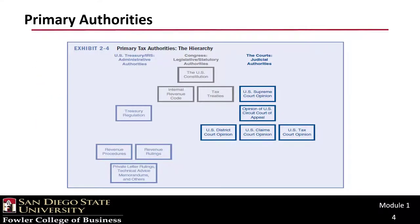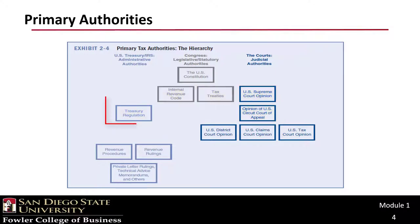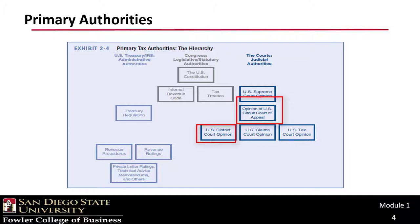This chart shows the relative hierarchy of the sources of tax law. The hierarchy shown within any category is more reliable than the hierarchy between categories. For example, is a Treasury regulation on equal footing with an appellate court decision? Not necessarily, but an appellate decision has greater weight than a district court opinion.